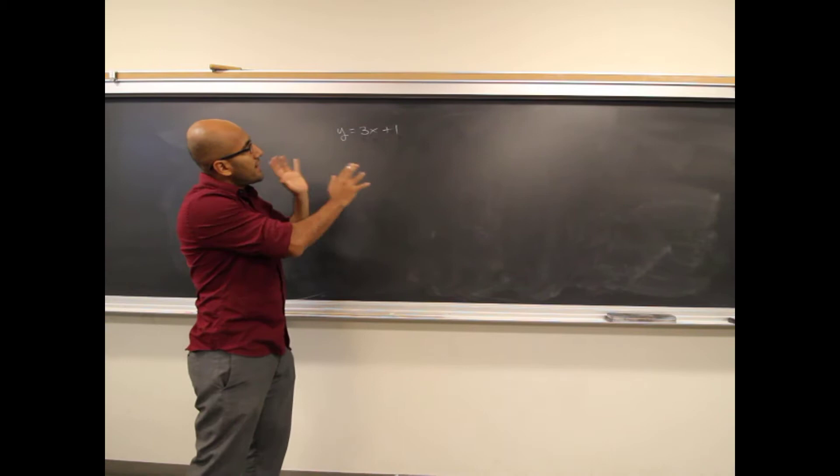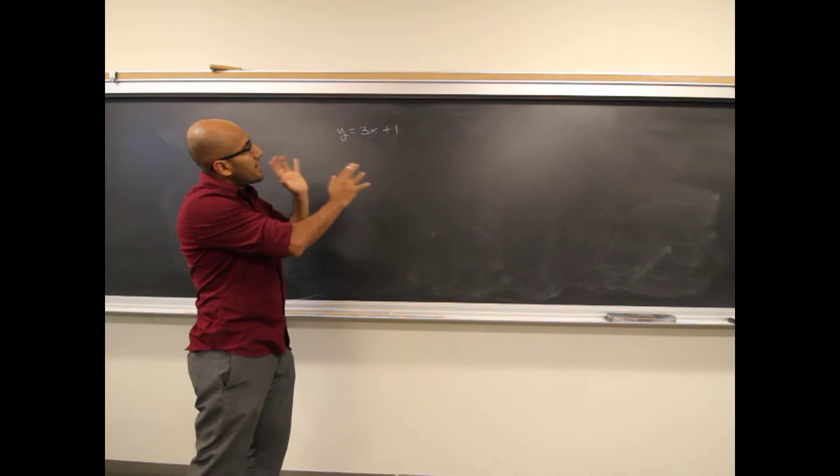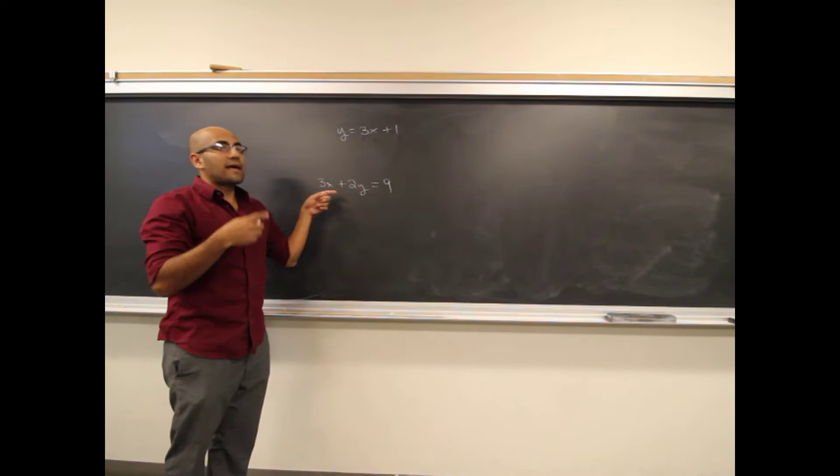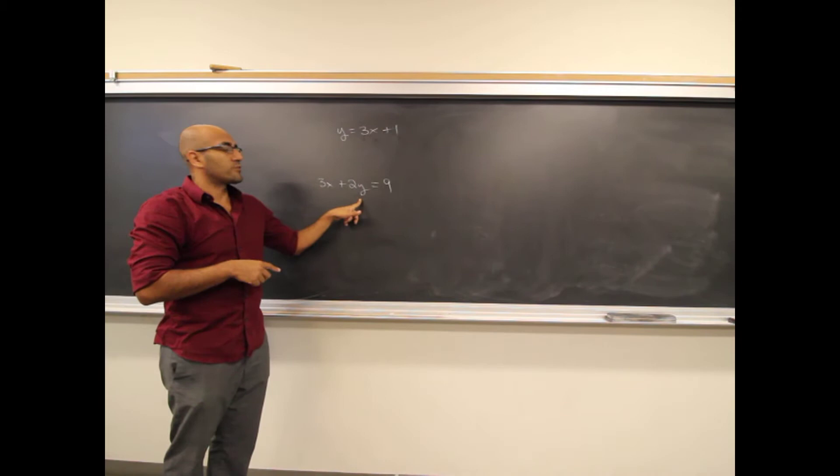They upped the ante a little bit by mixing things around, like we might get something like 3x plus 2y equals 9. Same kinds of questions — they might ask you to find some ordered pairs, or find the slope, so we'd have to do a little bit of algebra to put it into slope-intercept form of a linear equation.